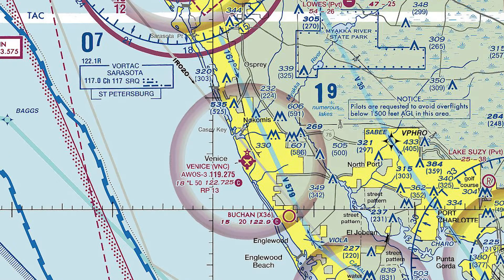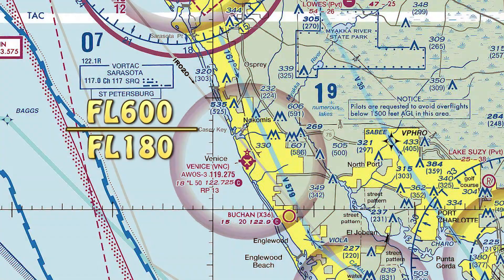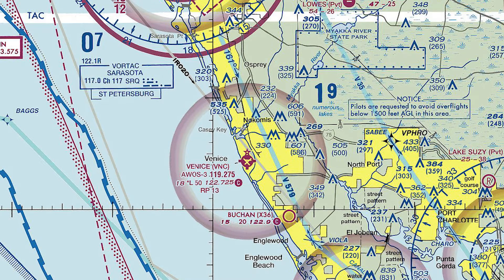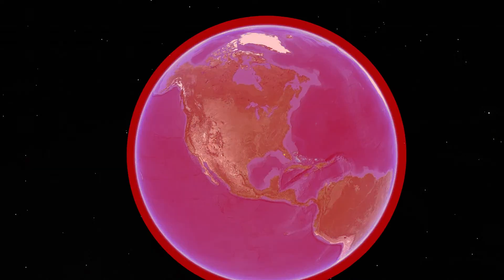What we're looking at here is a sectional chart. We can see some Class E airspace that starts at 700 feet AGL, some Class C airspace starting at the surface, and some Class D airspace — but where's the Class A airspace? Well, Class A airspace covers everything. It just starts at 18,000 feet, flight level 180, and includes 18,000 feet all the way up to flight level 600, which is 60,000 feet. It covers the entire country, and just below 18,000 feet there are different types of airspace.